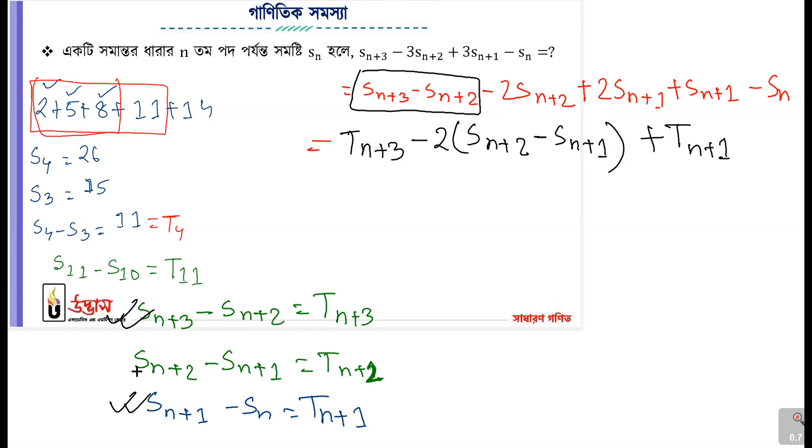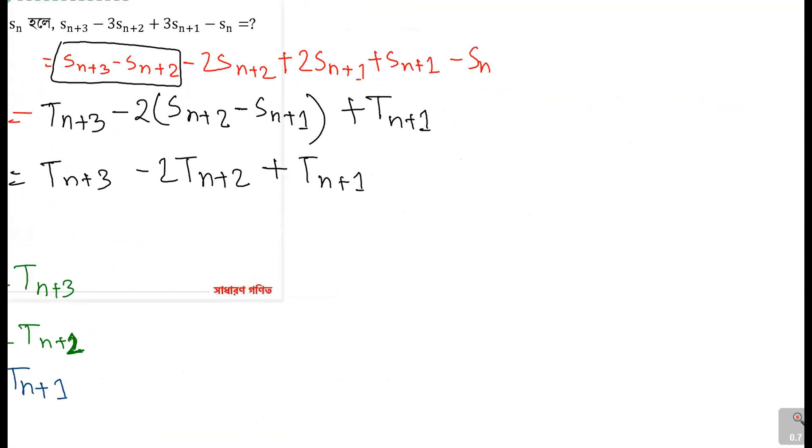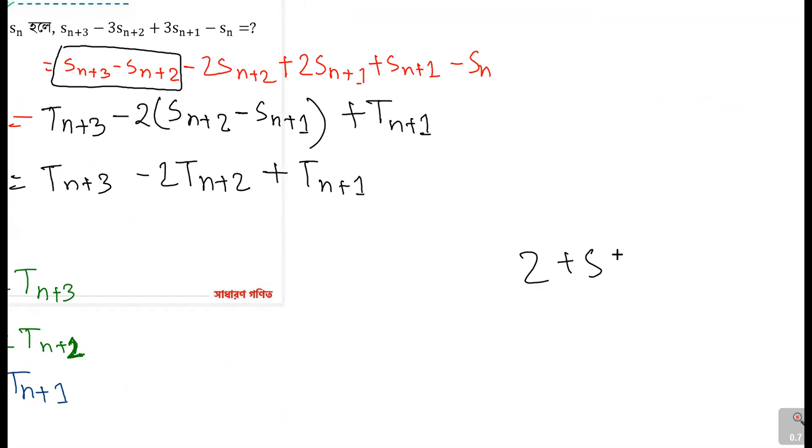Now, what do we have written? We have written that S_{n+2} to S_{n+1}, we have T_{n+2}. Ultimately, we have written T_{n+3} minus 2 into T_{n+2} plus T_{n+1}. This is the concept.